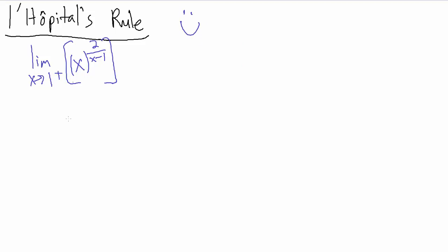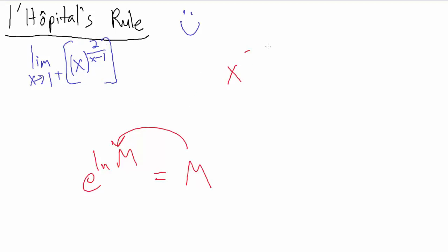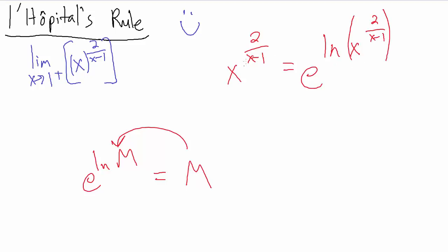If you saw the last two videos with the exponential type functions, you might know what's coming. We're going to use the trick from precalculus: the natural log function tells us that e to the natural log of M equals M. We're going to use this property in reverse, treating x to the 2 over x minus 1 as our big M. So that equals e to the natural log of x to the 2 over x minus 1.